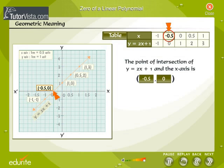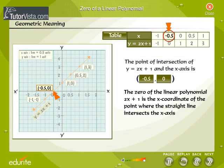From the table, we know that the zero of 2x + 1 is -0.5. So the zero of the linear polynomial 2x + 1 is the x-coordinate of the point where the straight line intersects the x-axis. A linear polynomial has exactly one zero.